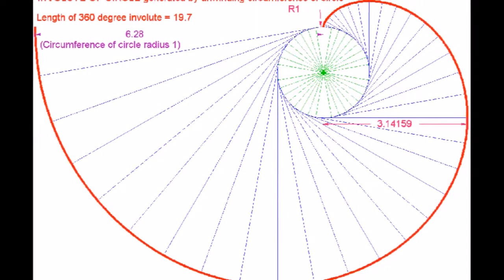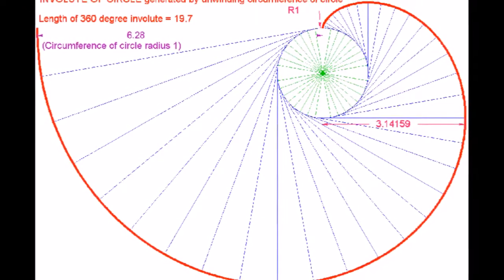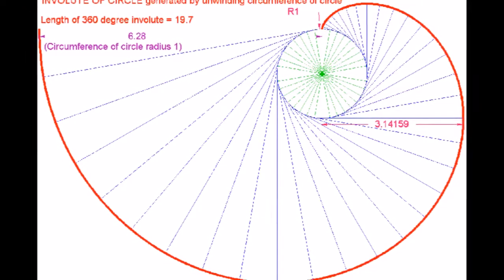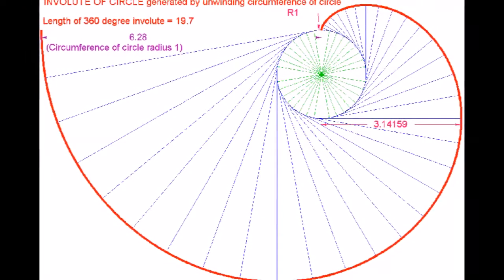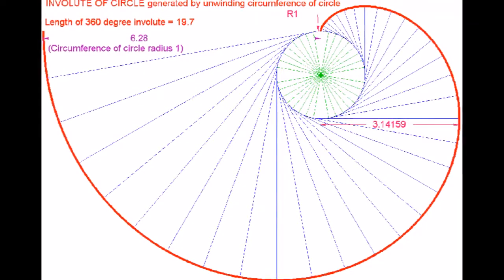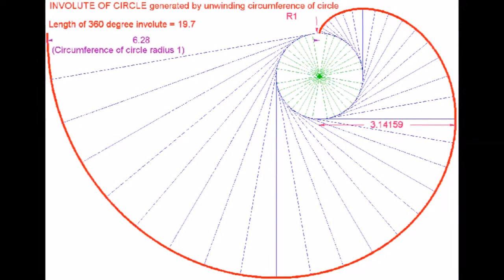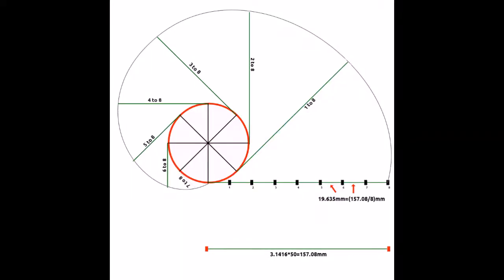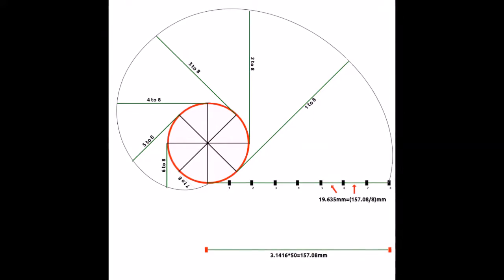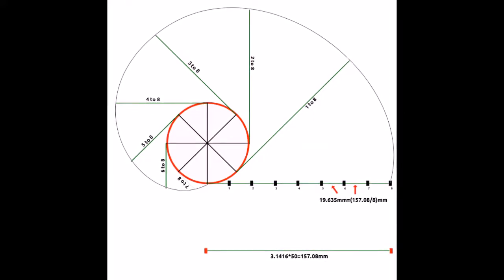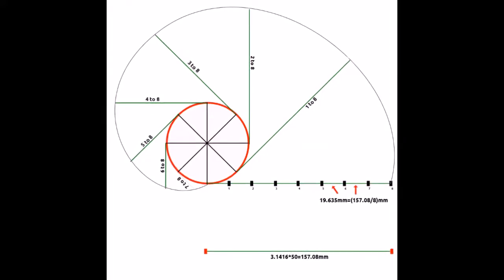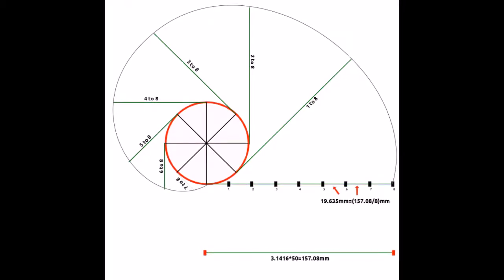The way to construct the involute of a curve is to replace the taut string by a line segment that is tangent to the curve on one end, while the other end traces out the involute. The length of the line segment is changed by an amount equal to the arc length traversed by the tangent point as it moves along the curve.